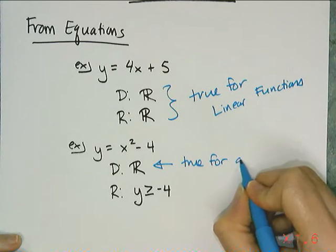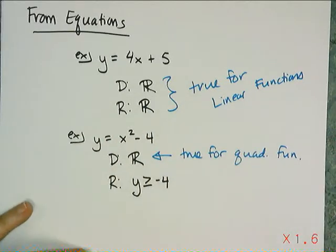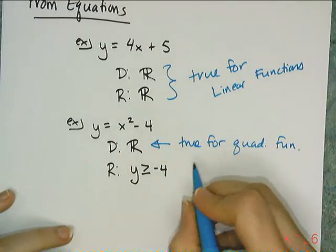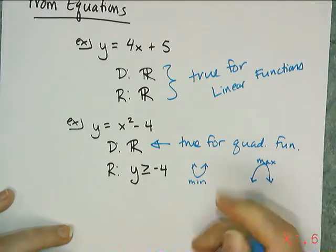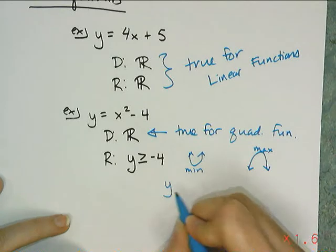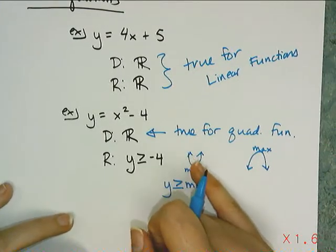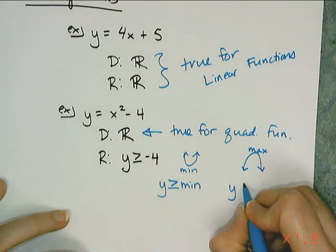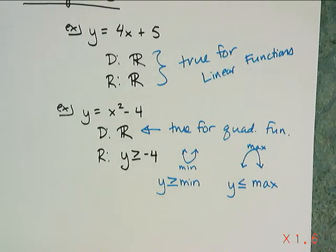Now, if the domain is limited ahead of time, that changes things. But for quadratics, there are actually two cases. I have the happy face parabolas, which have some minimum value — those have range y greater than or equal to the minimum. And I have the frowny face parabolas, which have some maximum value — those have range y less than or equal to the maximum. So that's how I find the range for a quadratic.